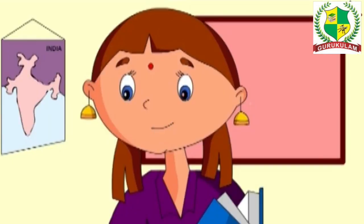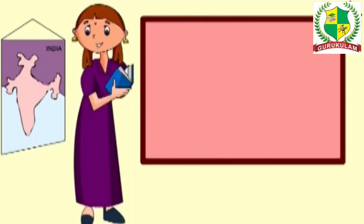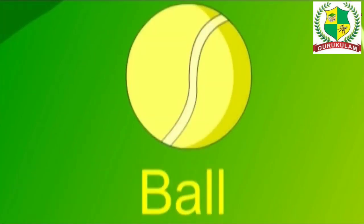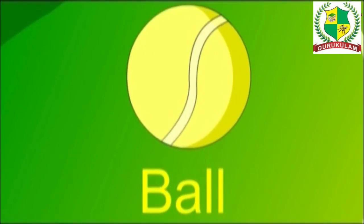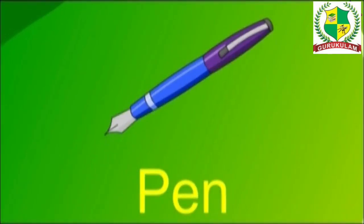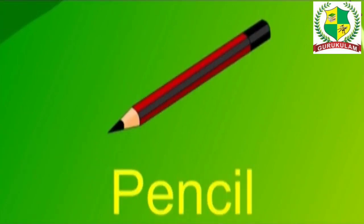Hi children, as we know how to read and write alphabets, we now learn to read and write small words. Okay? B-A-T, BAT. B-A-L-L, BALL. P-E-N, PEN. P-E-N-C-I-L, PENCIL.